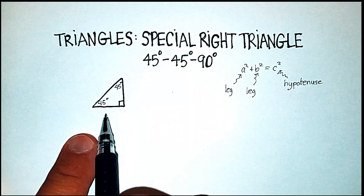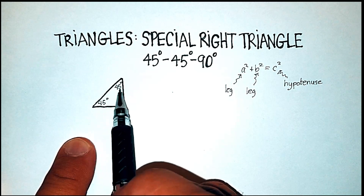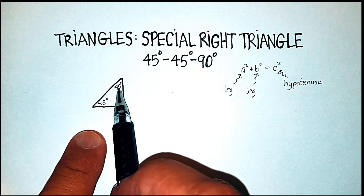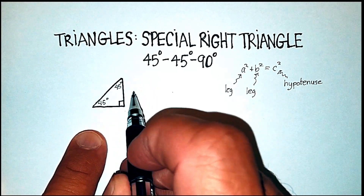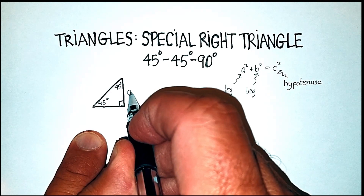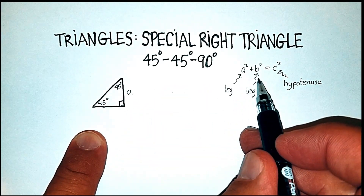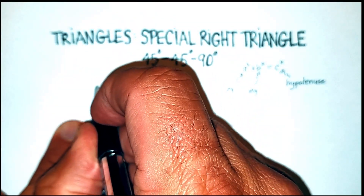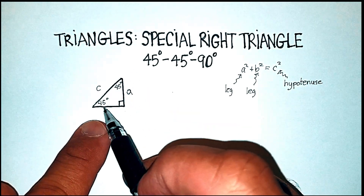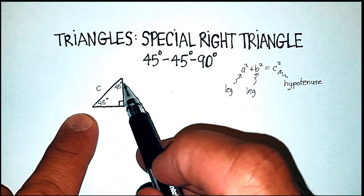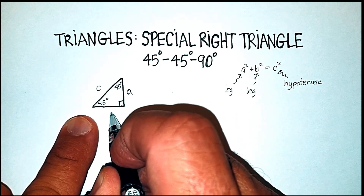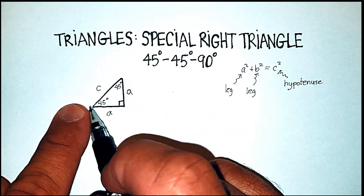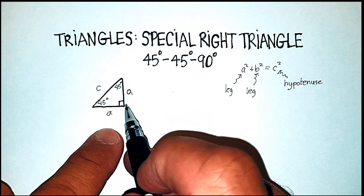If this is a 45-degree angle, 45-degree angle, and this is 90 degrees, that means that directly opposite the 45 degrees we could call that side a, as we would use in the Pythagorean theorem. Which means the hypotenuse is c. And if this is 45 degrees and this is 45 degrees, it means that instead of b, this would also be the length a. That means that these two legs would be exactly the same length.